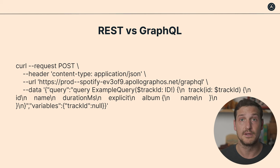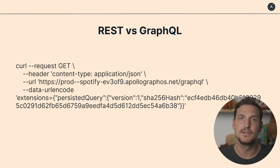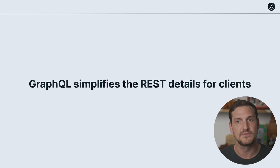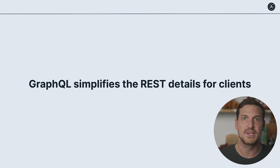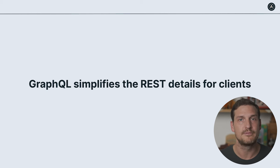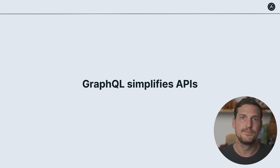You may be asking about REST versus GraphQL — is one replacing the other? To be honest, we've seen them work together. GraphQL really is just REST at the heart of it — it's a POST request, and the query for the GraphQL operation is just in the body of that POST request. GraphQL also supports GET requests, called persisted queries, where the operation is hashed into an ID and URL encoded, enabling things like CDN caching. Overall, GraphQL simplifies the REST details for clients.